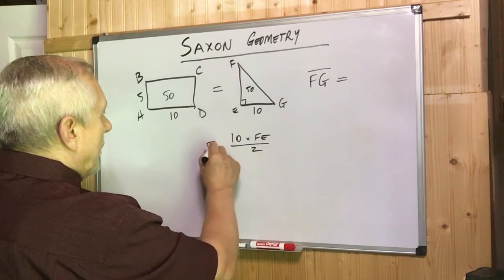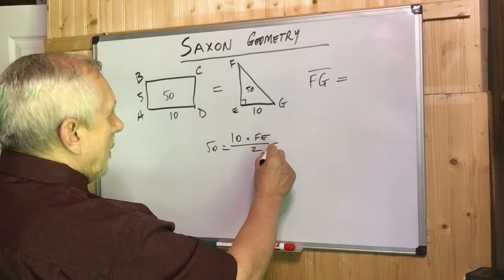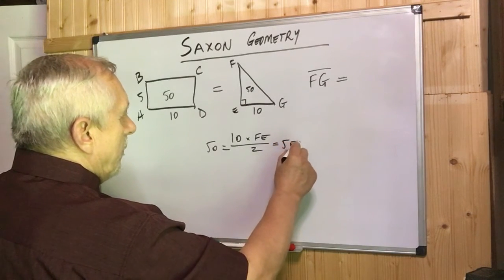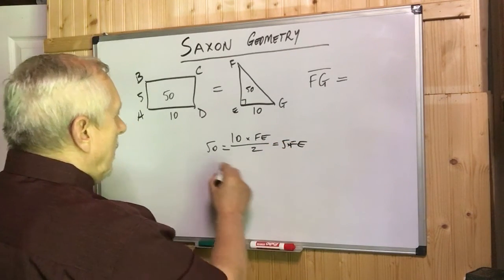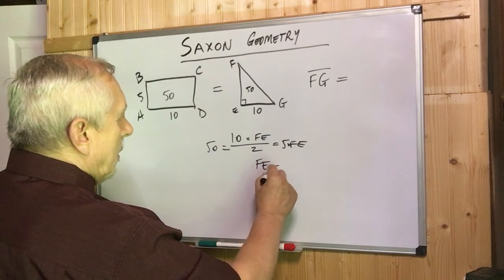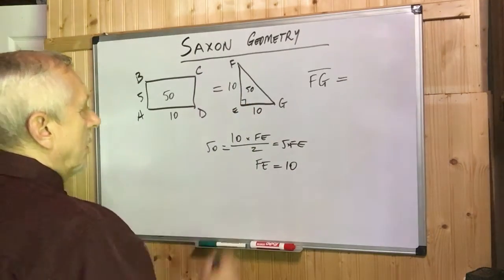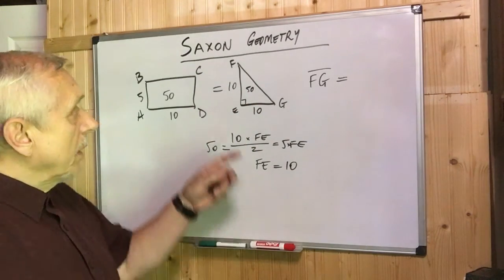And that's 50. And that means 5 FE, 5 times FE, simplified by 5, so FE will be 10. Okay, so this is 10. Now we apply the theorem of Pythagoras.